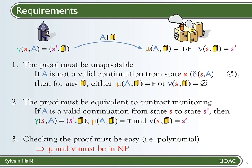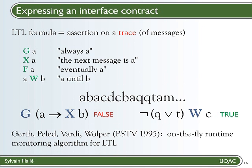Now to fix the ideas, I'll introduce one language suitable for expressing interface contracts, but keep in mind that you could use another one. The language in question is called linear temporal logic, or LTL. An LTL expression is an assertion on a trace of messages. You have four main operators in LTL: G, X, F, and W (or U). If you have a formula preceded by G, it means that this formula must always be true for every message of the trace. X means next, so it means that what follows applies to the next message of the trace. F in front of an expression means that some message in the future will satisfy that expression. And finally, the W operator has two operands and states that what's on the left is true for every message until one of them satisfies what's on the right.